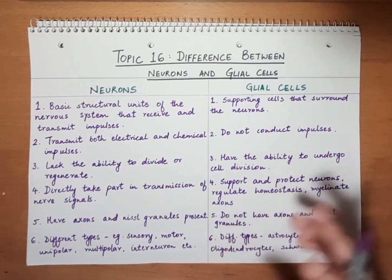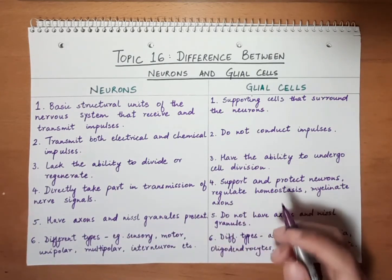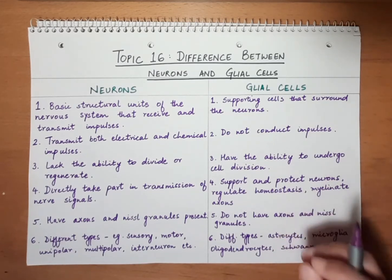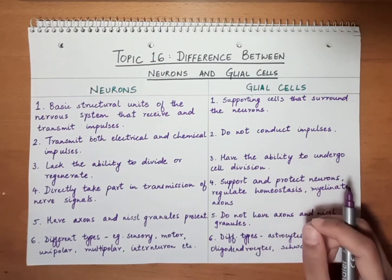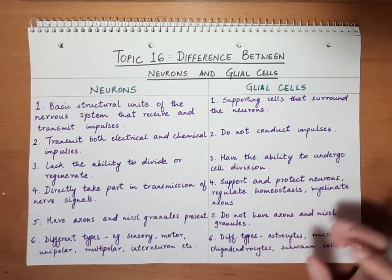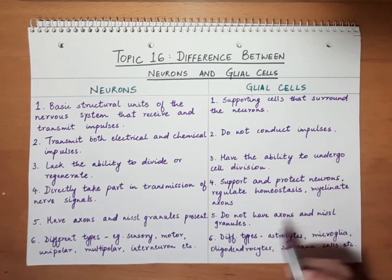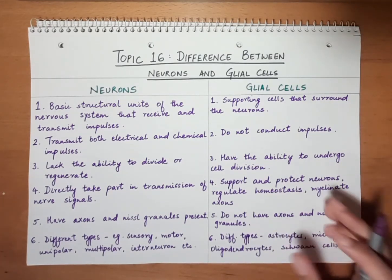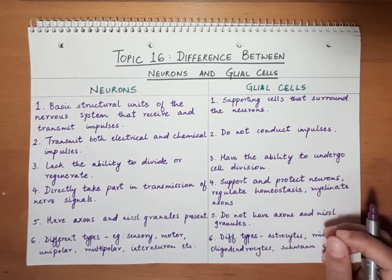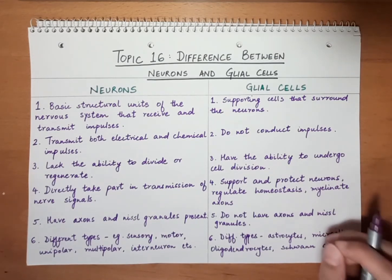Next, a structural difference: neurons contain axons and Nissl granules specifically in the cell bodies. Nissl granules are basically rough endoplasmic reticulum with ribosomes, present in the cell bodies and also in dendrites. Glial cells, however, do not contain any axons or Nissl granules — they are structurally very different from neurons.